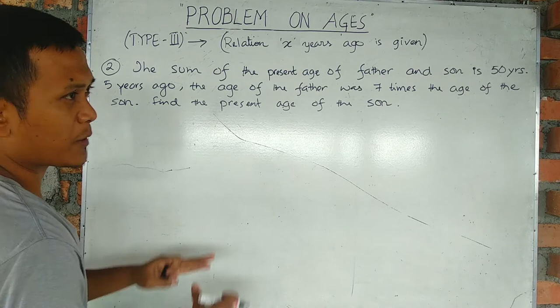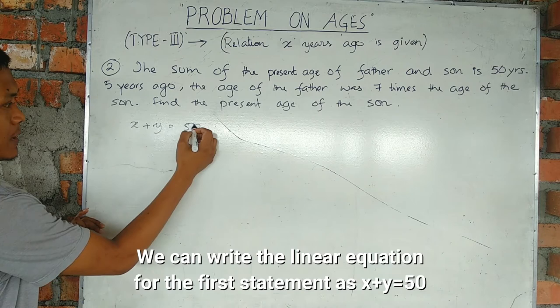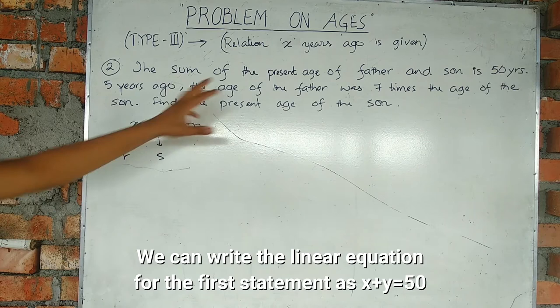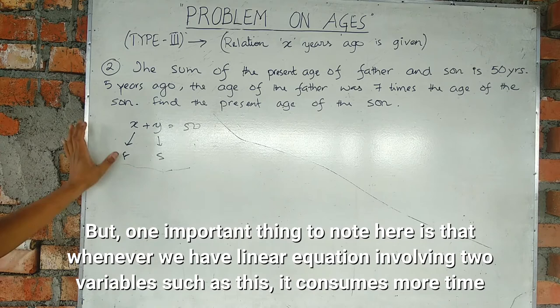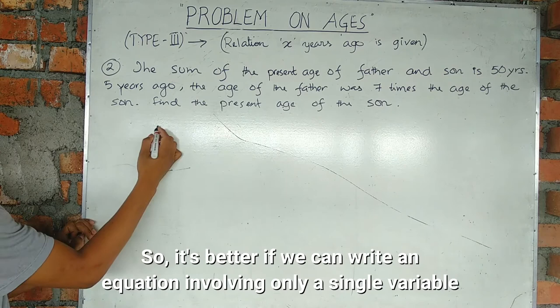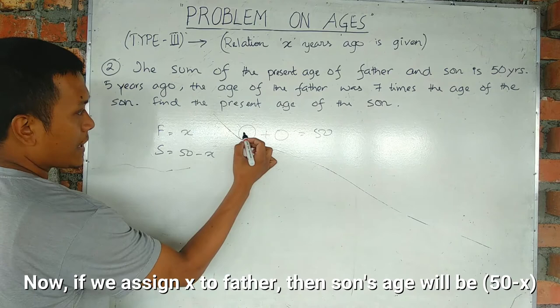The total is 50. This is the total of 50. The equation uses variables. Let's say the son is x, then father is 50 minus x.